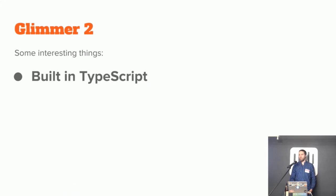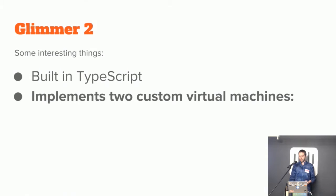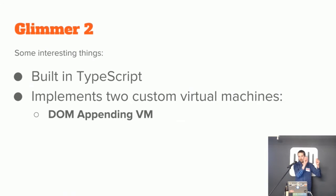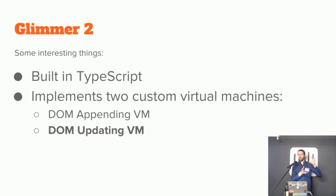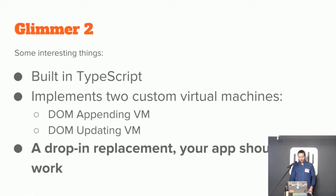Most of this talk is going to be exploring the code and actually running Glimmer, stepping through the code — I've only got a few slides. Some interesting things: it's built in TypeScript. It's an implementation of two custom virtual machines — one for drawing the initial render by appending and stitching together DOM nodes, and a second for once you have those DOM nodes and the data changes, updating them in a fast way. Like most things in Ember, it's also a drop-in replacement, completely compatible with previous versions of Ember templates.